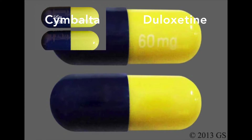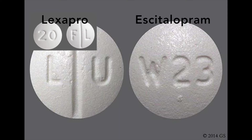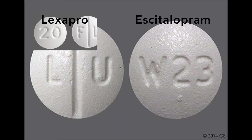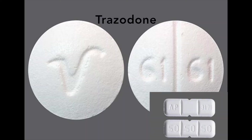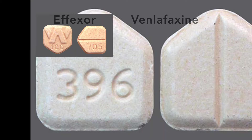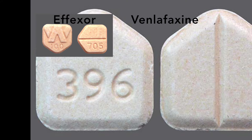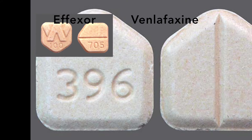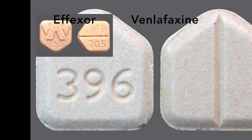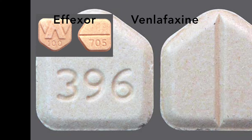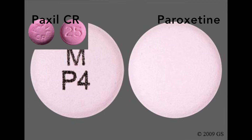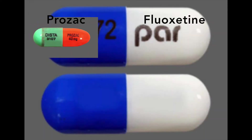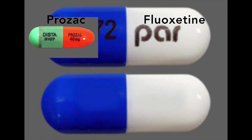Duloxetine and Cymbalta are also SSRIs that help depression. Citalopram and Lexapro are also SSRIs. Desyrel is the brand name of Trazodone, and both are mood elevators. Venlafaxine and Effexor are SNRIs — serotonin and norepinephrine reuptake inhibitors — prescribed for depression, anxiety issues, generalized social anxiety, or panic disorder. Paxil and paroxetine increase serotonin in the brain, helping with depression. Prozac and fluoxetine are SSRIs that help with depression and also OCD, eating disorders, panic attacks, and PMDD.